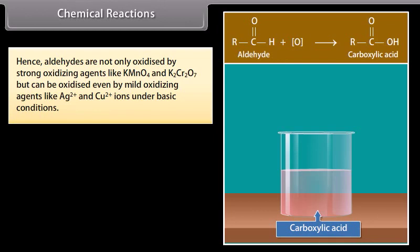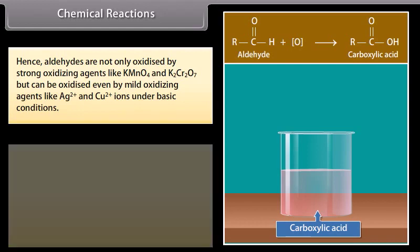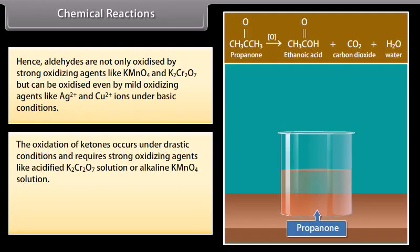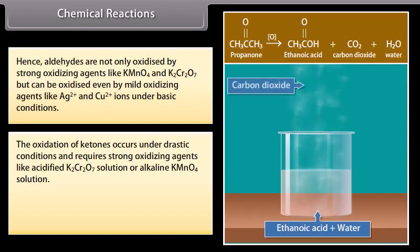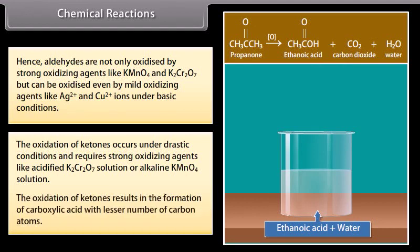Hence, aldehydes are not only oxidized by strong oxidizing agents like potassium permanganate and potassium dichromate, but can be oxidized even by mild oxidizing agents like Ag2+ and Cu2+ ions under basic conditions. The oxidation of ketones occurs under drastic conditions and requires strong oxidizing agents like acidified potassium dichromate solution or alkaline potassium permanganate solution. The oxidation of ketones results in the formation of carboxylic acids with a lesser number of carbon atoms.